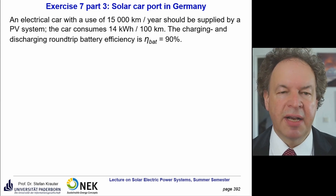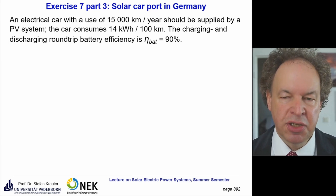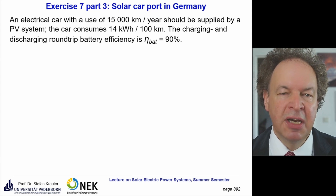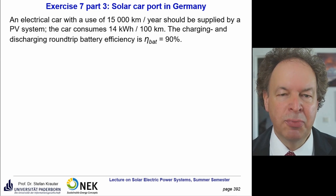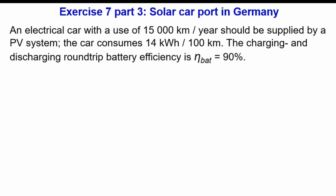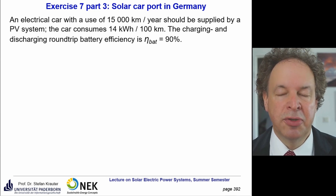The last part of the exercise zooms in much smaller: we design a solar carport in Germany. One part is the calculation of the PV generator, but first we must find out the consumption — equivalent to the procedure for designing a solar home system. We have some basic data for our car and then design the PV panel so it runs through the whole year, considering the worst month.